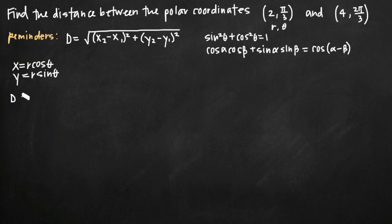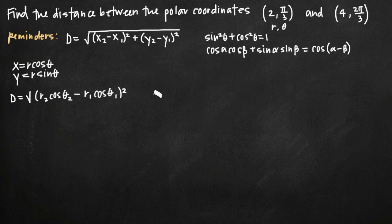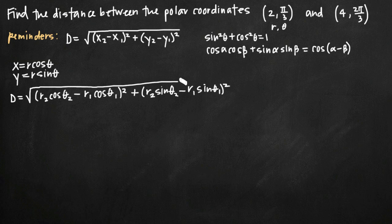If we want the distance formula in terms of polar coordinates, we substitute for x₂ with r₂·cos(θ₂), and for x₁ with r₁·cos(θ₁), and square that. We make the same substitutions for y, getting r₂·sin(θ₂) minus r₁·sin(θ₁), and square that. Now it's just a matter of simplifying this formula using a couple of trigonometric identities to arrive at the distance formula in polar coordinates. We'll distribute the squared exponents and multiply these out.